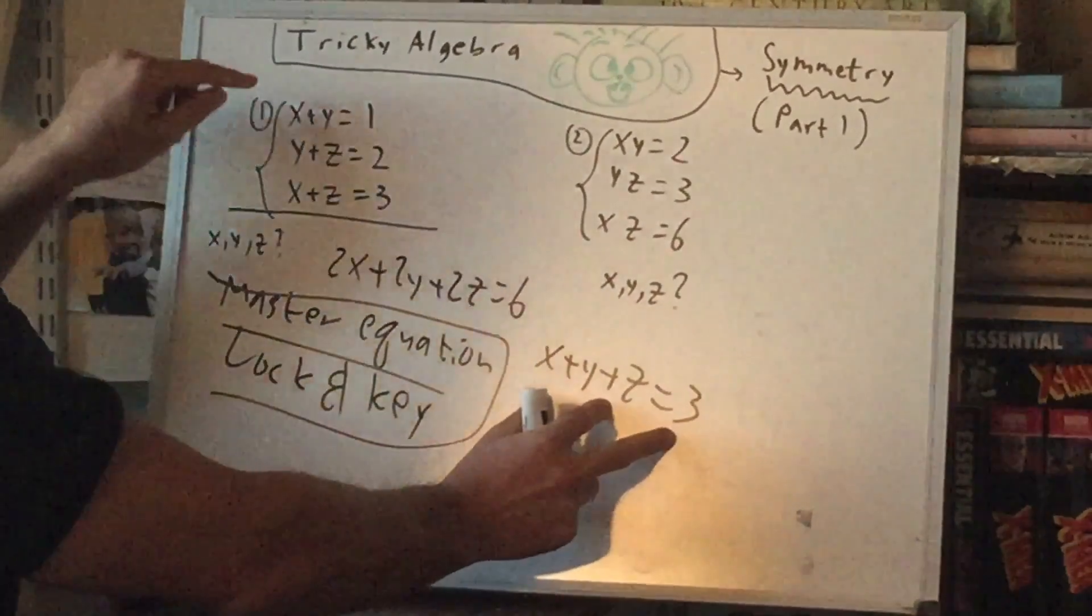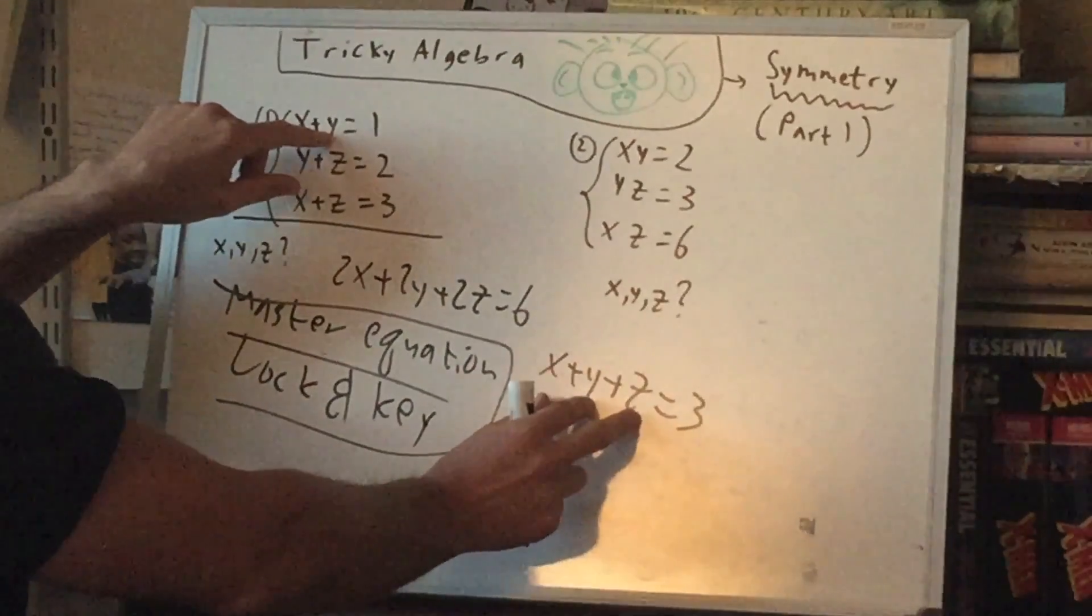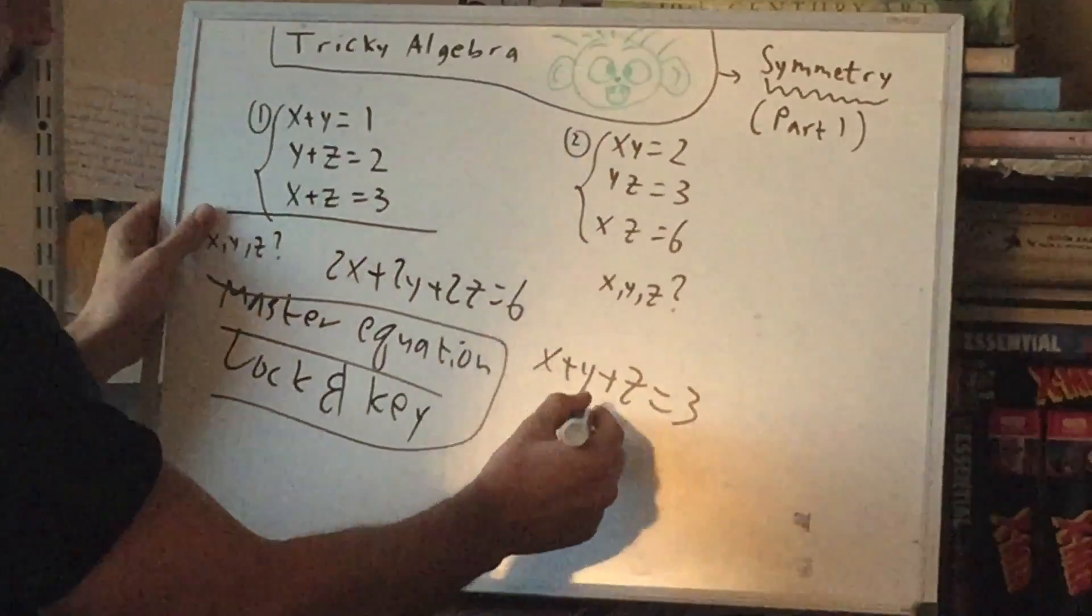For example, combine this with the first one. Here we have x, y, and z, here we have only x and y. So if we subtract, then we're going to find out what z is, which is 3 minus 1. So z would be 2.